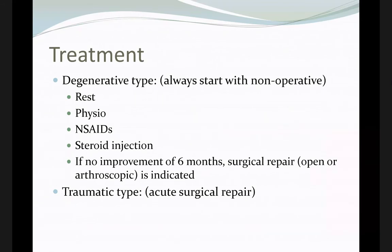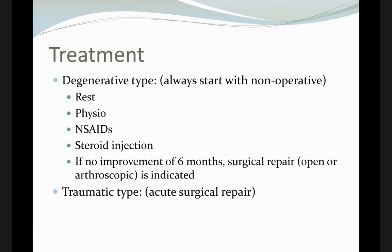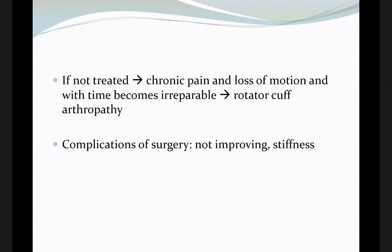It can be massive, meaning it cannot be repaired. Treatment again starts with non-operative management, same as for subacromion impingement. If there is no improvement after six months, we advise surgical repair — either open or arthroscopic as indicated. We don't want to wait too long, as the tear can become massive and irreparable. For acute traumatic tears, the indication is for immediate surgical intervention.